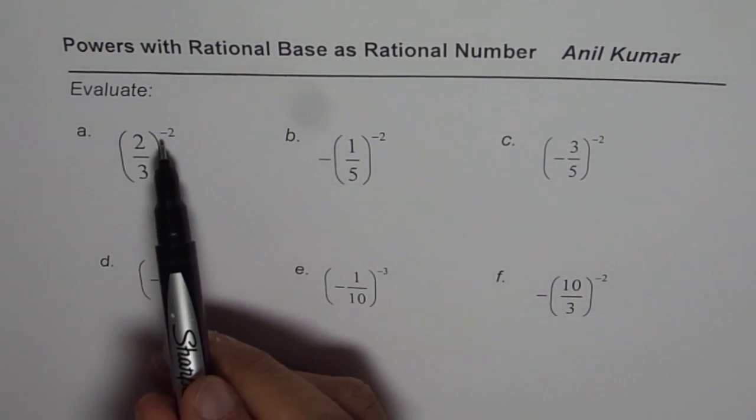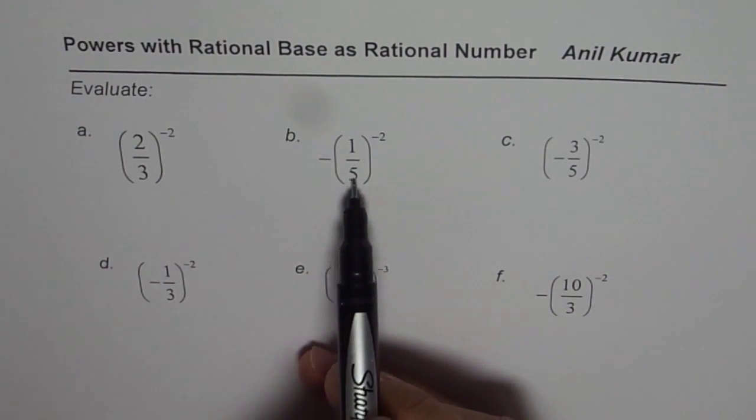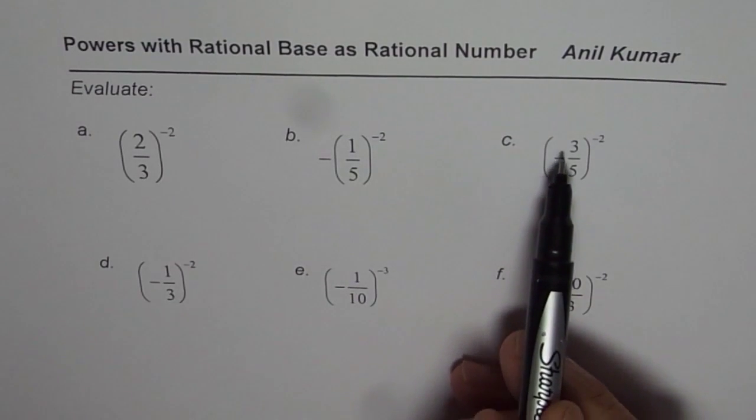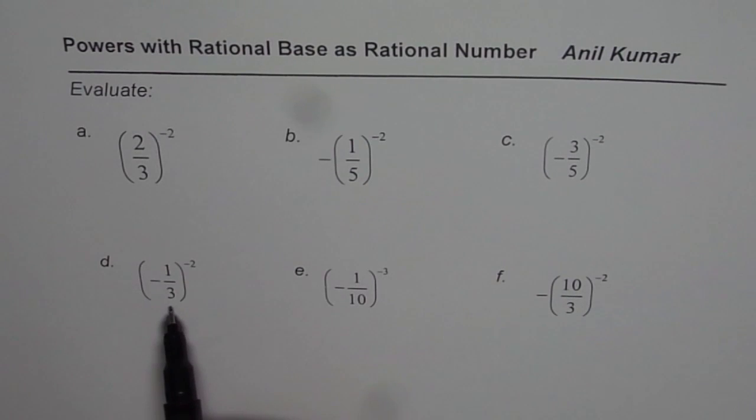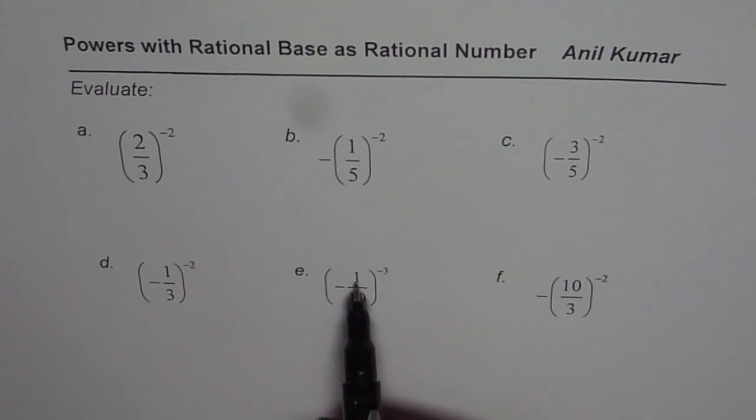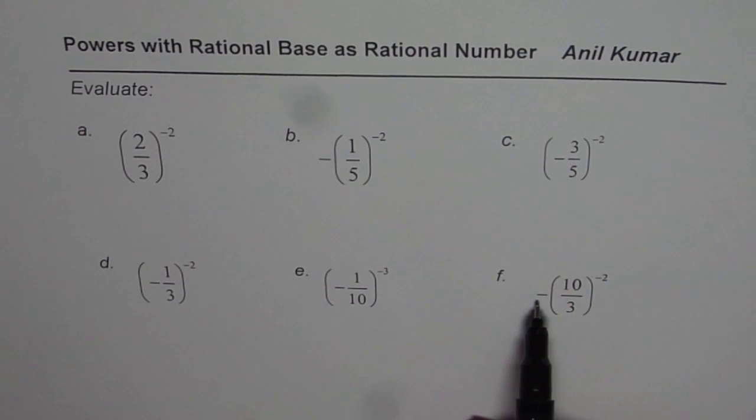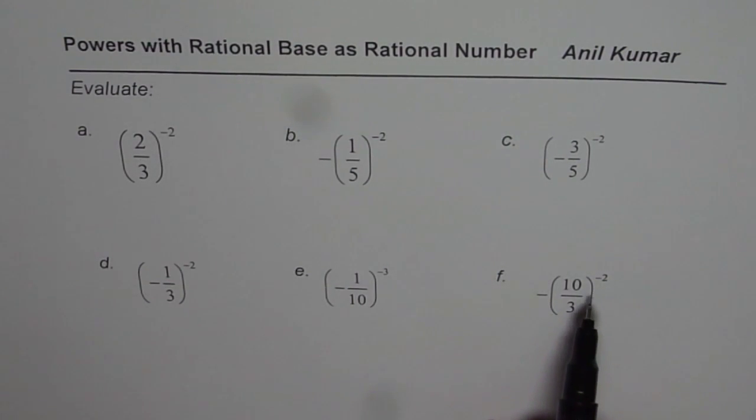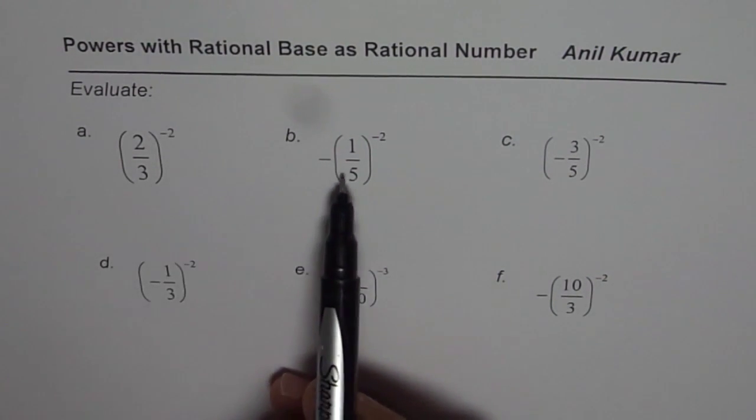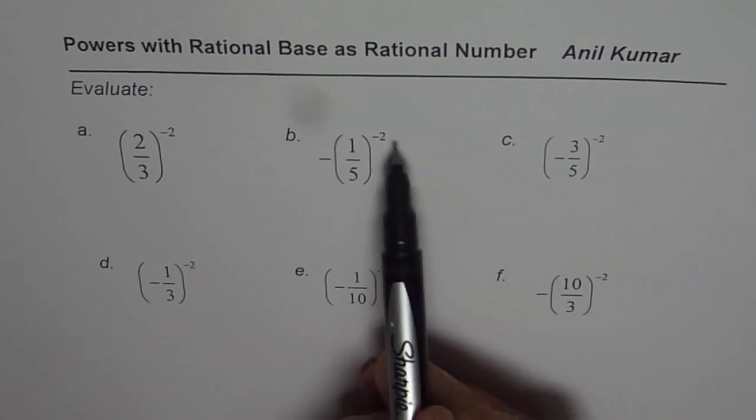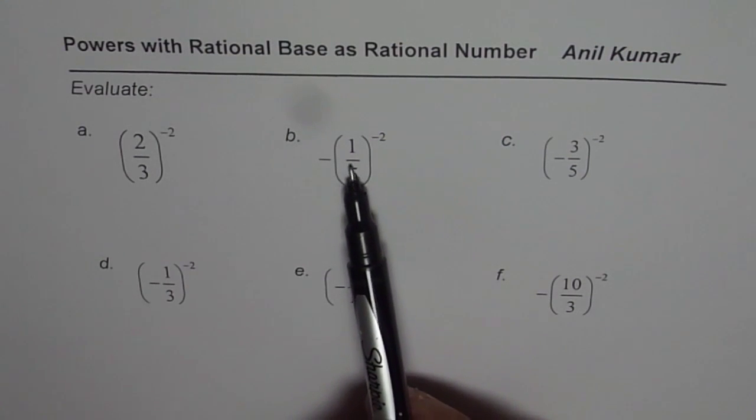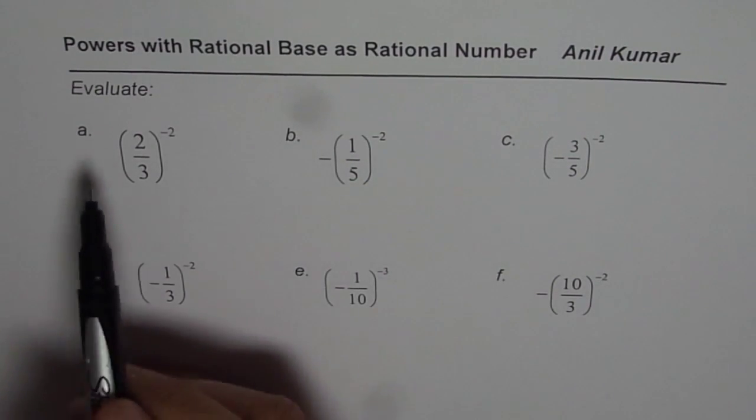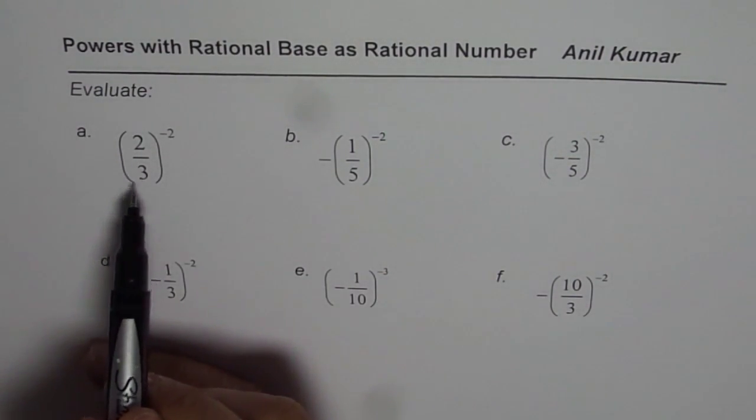We have (2/3)^-2, (-1/5)^-2, (-3/5)^-2, and then we have (-1/3)^-2, (-1/10)^-3, and (-10/3)^-2. As you will note, the base is rational and the exponents are all integer exponents. With this negative number, it will flip the number inside and make it reciprocal. So, that's the first step which I'll show you clearly with the very first example.